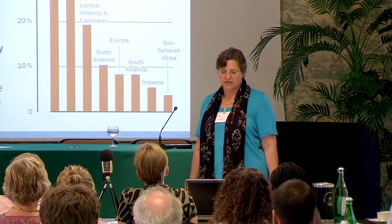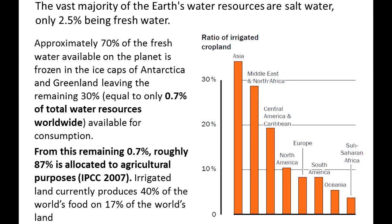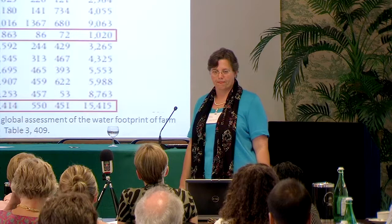Irrigated land currently produces 40% of our food on only 17% of the world's land — we can't abandon that. The largest share of irrigated cropland is in Asia, where more than 30% of agricultural land is irrigated. We can't change that from one day to the other. So actually, what we can do to save water is pretty limited.